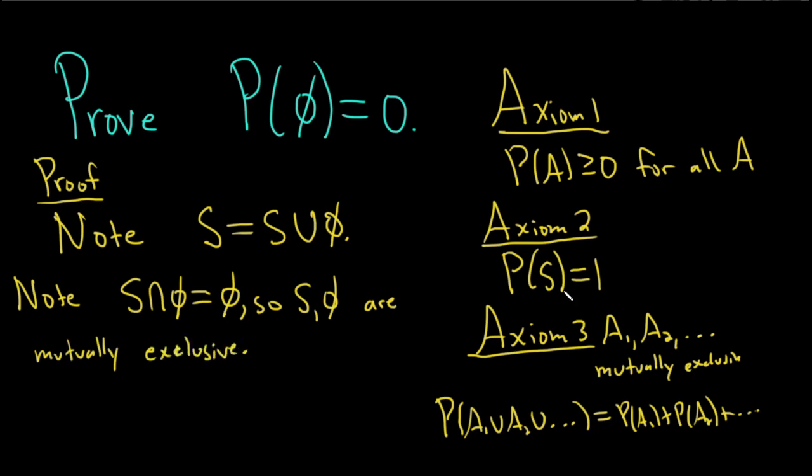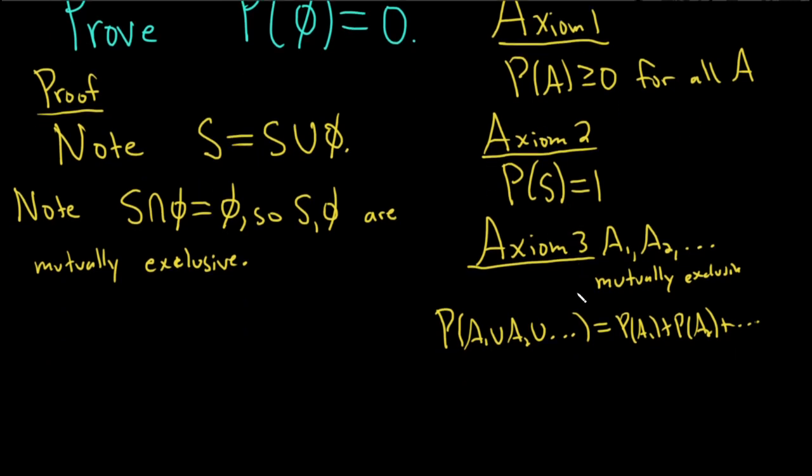And we need this so we can apply Axiom 3 now. Let's take the probability of both sides. The probability of S equals the probability of S union the empty set.